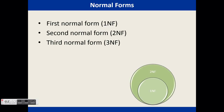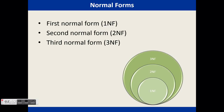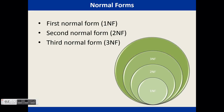The third normal form, 3NF, designates a better-designed database than first or second, and it includes the requirements of second normal form, which includes first normal form, and adds additional requirements. The first three forms are the most common, but there are higher normal forms that we will discuss later.